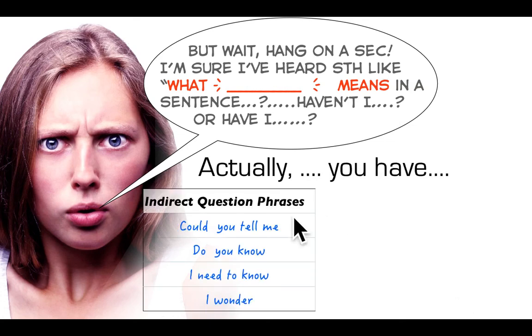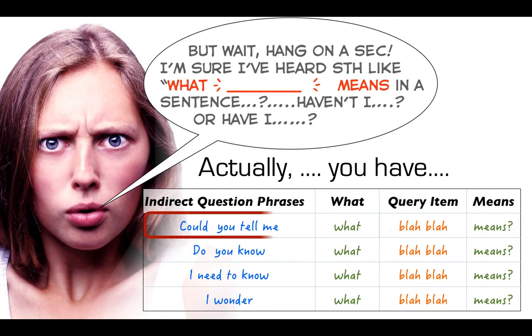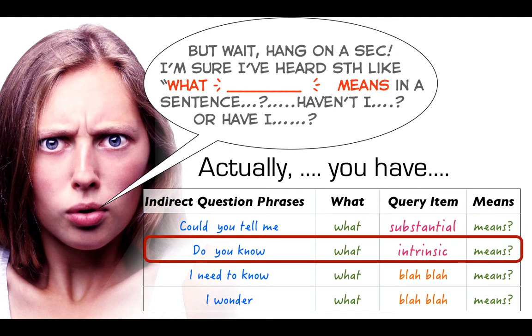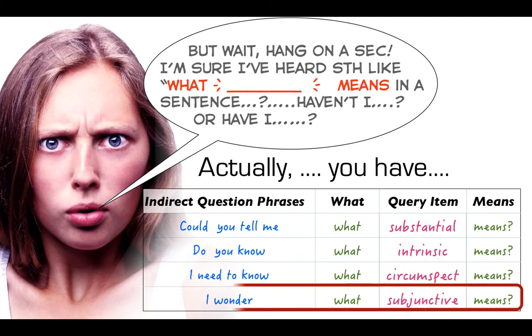In indirect question phrases like could you tell me, do you know, I need to know, I wonder, these will use a what plus a query item plus means. So what blah blah means. For example could you tell me what substantial means. Do you know what intrinsic means? I need to know what circumspect means and I wonder what subjunctive means. That's how it works when it's indirect.